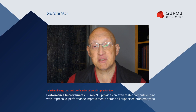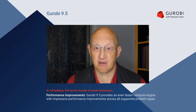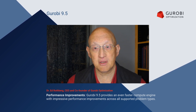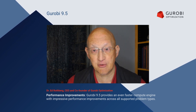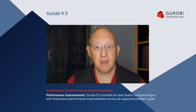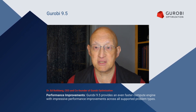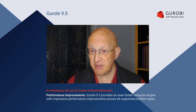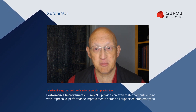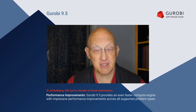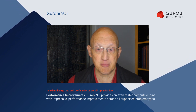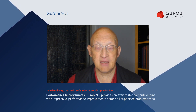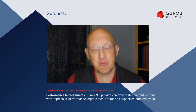First, let me talk about performance. We've increased performance across pretty much all of the problem types that we solve. For linear programming, there are a variety of algorithms for solving LPs. The smallest improvement is for the concurrent solver, where across our broad set of LP test problems we have an average performance improvement of 14%. The largest improvement is for our primal simplex solver, where the improvement across the broad test set is 23% on average. And for the harder models in the set, the improvements are even larger.